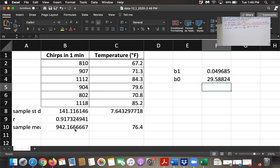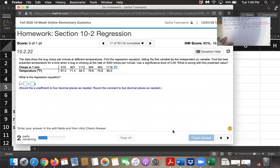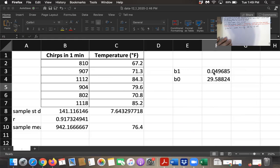Now I'm not sure what MyLabStatistics wants, so we should go back to MyLabStatistics and see what that fine print looks like. They want us to round the x coefficient to four decimal places and the constant to two decimal places. So the x coefficient is this b sub 1. So y hat will equal b sub 1, which is 0.0497, when I round to four decimal places times x plus b sub 0. And they want us to round that to two decimal places. So that's 29.59.